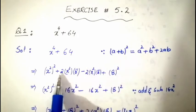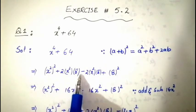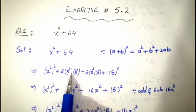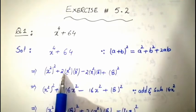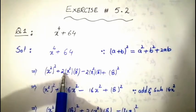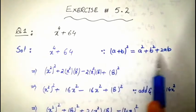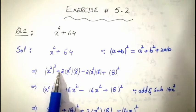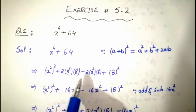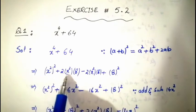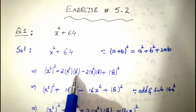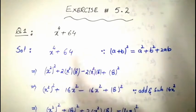Now we need 2ab. Here a = x² and b = 8, so 2ab = 2·x²·8 = 16x². For completing the square, we add this term and also subtract it, because if we only add it, the expression changes. So we add 2ab and also subtract 2ab — where a = x² and b = 8.